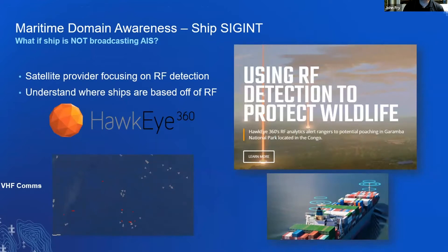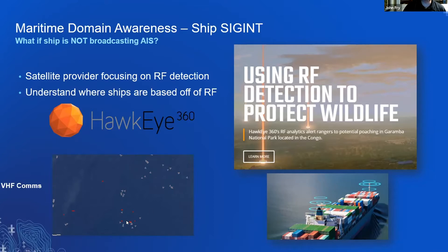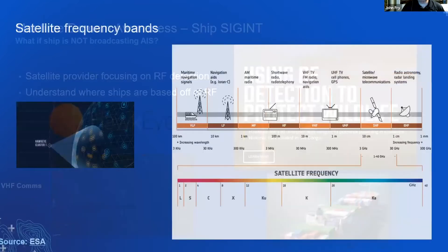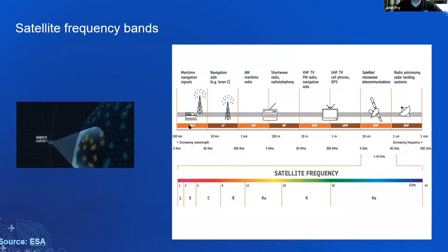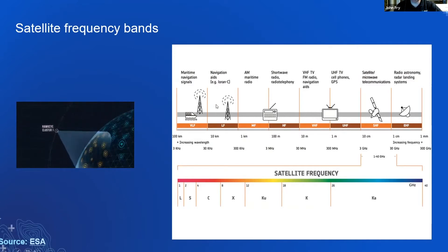Another provider is Hawkeye360. What if a ship is not broadcasting AIS? They have an offering that picks up RF signals — radio frequency signals. When a ship has its radar on or is talking on radio, they're able to pick it up. They've also been using it to protect wildlife. The red ellipses you see are ships communicating together on radio. X-band and L-band are basically ship radar and navigation systems, and VHF is radio communication. Hawkeye is the provider that supplies that data.